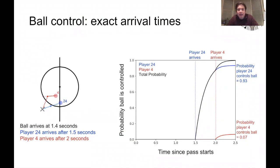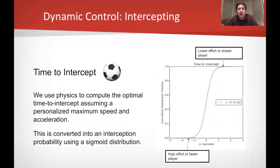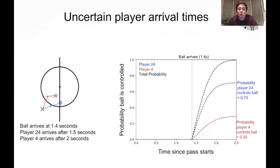This all assumes we know exactly when each player will arrive, but as Will described, his model incorporates uncertainty in player arrival time, which he models using a sigmoid distribution with a standard deviation of 0.45 seconds. If we incorporate this into our model, the probability changes significantly: there's less of a window for player 24 to control the ball unopposed, so his final probability drops from 0.93 to 0.7, and the probability that player four controls the ball increases correspondingly to about 0.3.